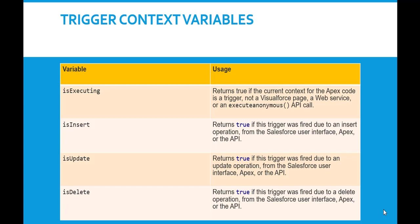The first trigger context variable is called isExecuting. This particular context variable returns true if the current context for the Apex code is a trigger, but not a Visualforce page, a web service, or an execute anonymous API call. So as long as the current context is a trigger, this variable will return true.